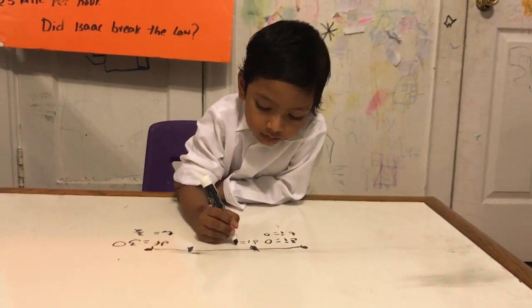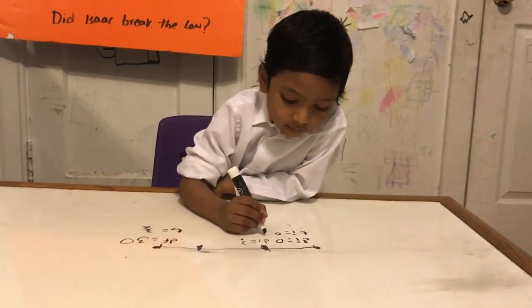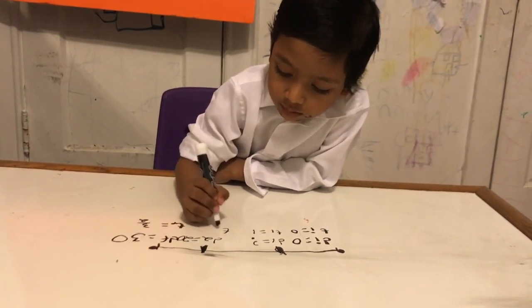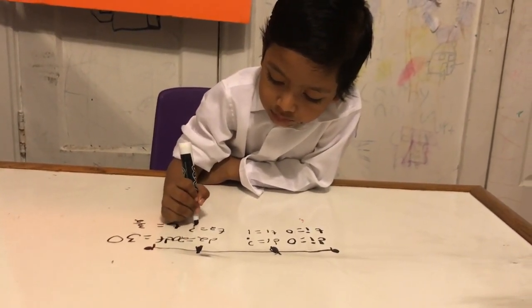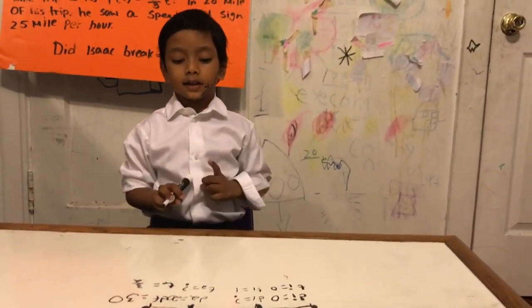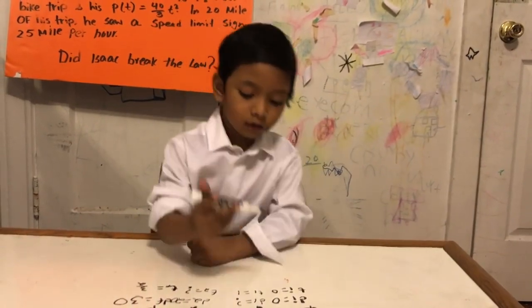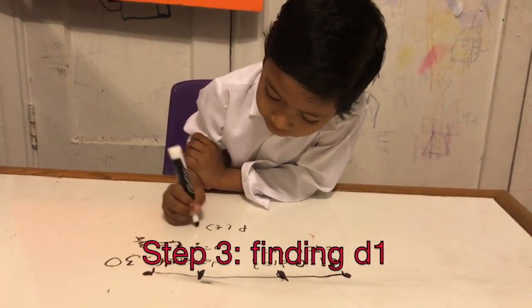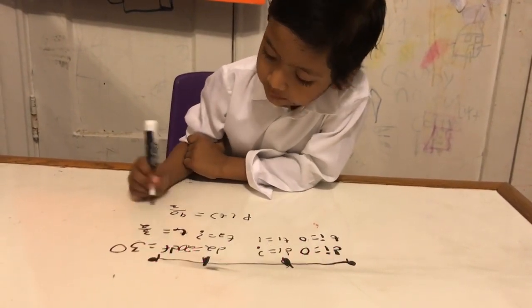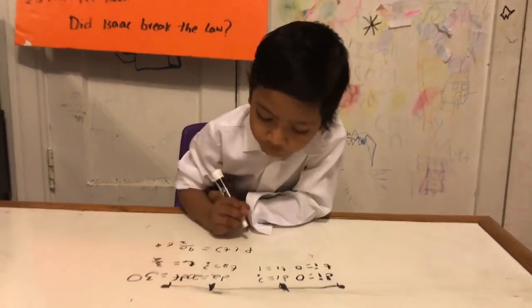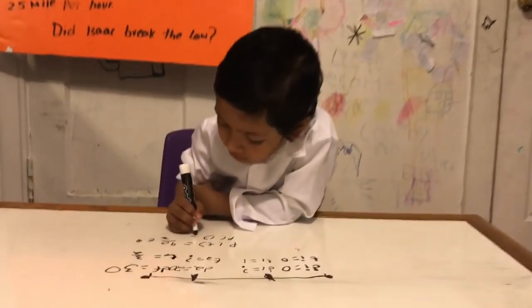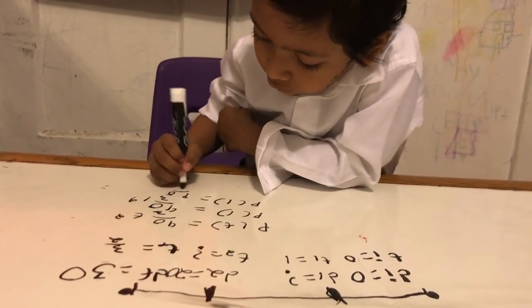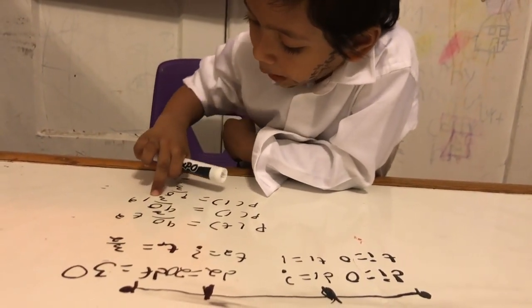d1 is equal to cosine mark and t1 is equal to 1. d2 is equal to 20 and t2 is equal to cosine mark. This is a pattern — d is missing and t is missing. So first we are going to find d1. p(t) is equal to 40 over 3t squared. This time we replace t with 1. So p(1) is equal to 40 over 3 times 1 squared.